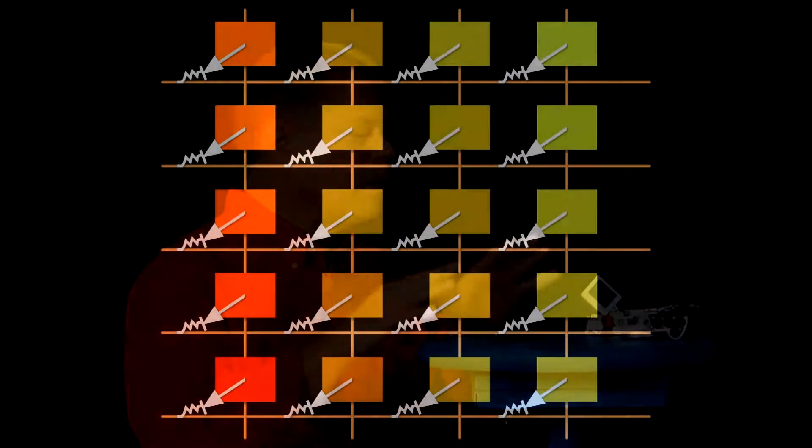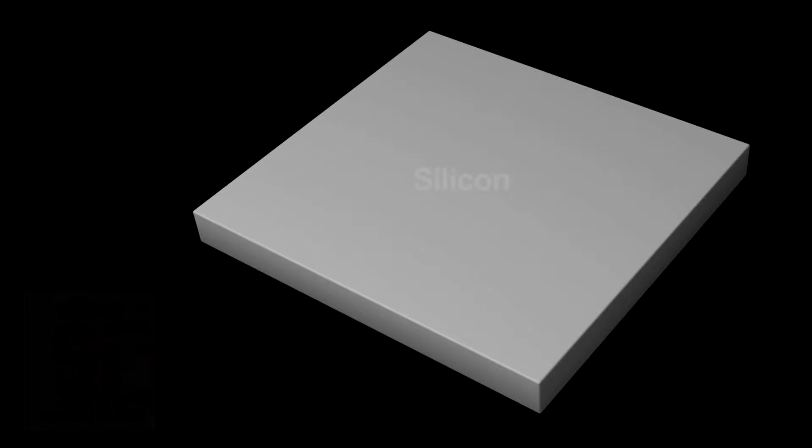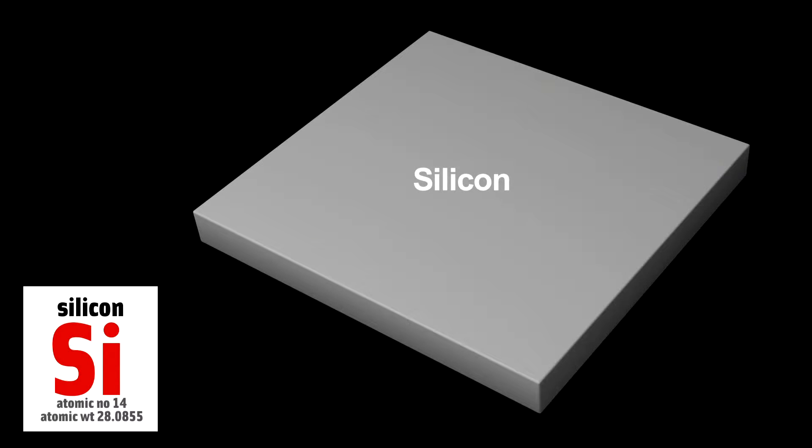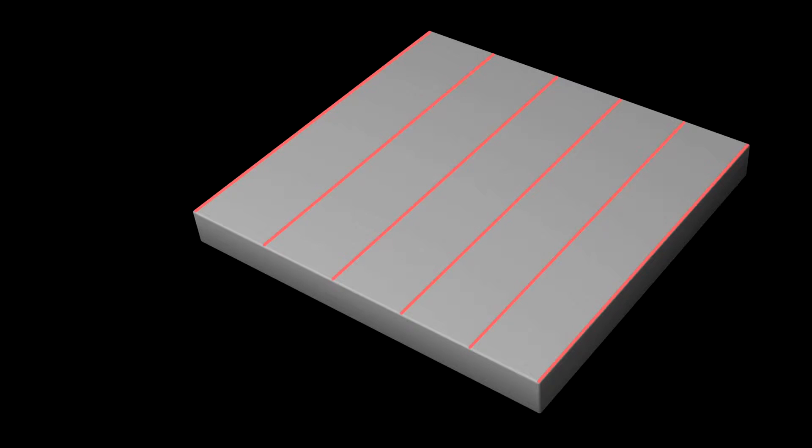A CCD solves this problem in a very simple way. The pixels have no wires attached to them. A CCD is made from a slab of silicon. To make each pixel within the slab, engineers create insulating sections called channel stops. These divide the slab into rows.